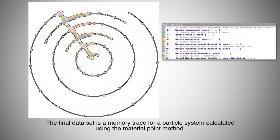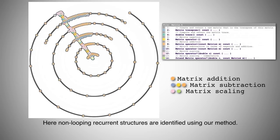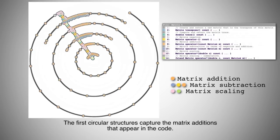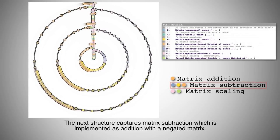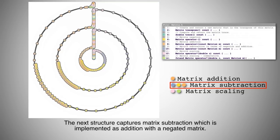The final dataset is a memory trace for a particle system calculated using the material point method. Here, non-looping recurrent structures are identified using our method. This example shows calculation of the stress rate. The first circular structures capture the matrix additions that appear in the code. The next structure captures matrix subtraction, which is implemented as addition with a negated matrix.